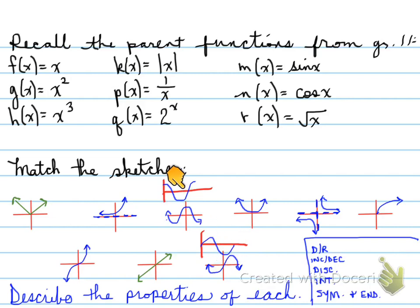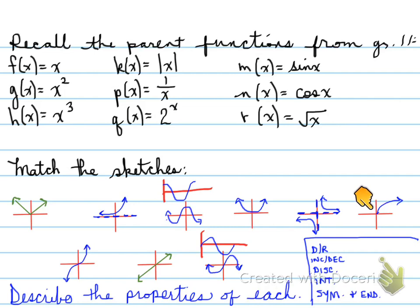Then we had the cosine function, which is this one. And don't forget, it's periodic — it repeats itself. And finally, the root function. Those of you that remember the root: it was kind of funny because it actually had only one arrow, and the other end is not an arrow but a point. It starts at 0, 0 and it moves in this direction.